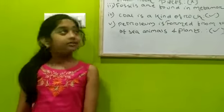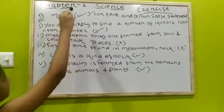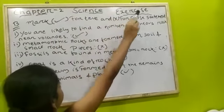Hello friends, today I am going to discuss about Chapter 2, Science Exercises. We mark correct for true and cross for false statement.